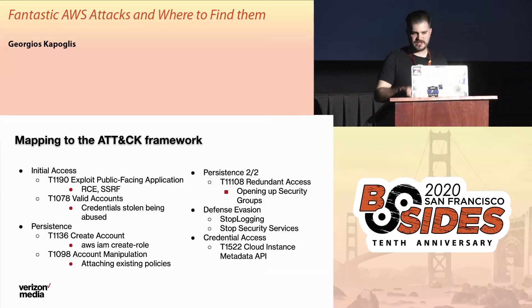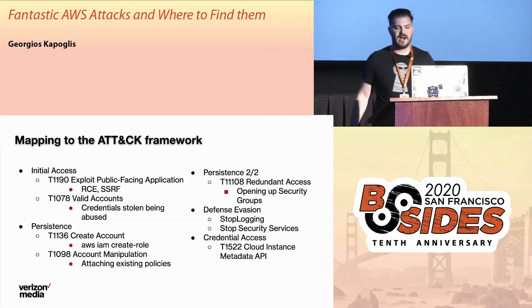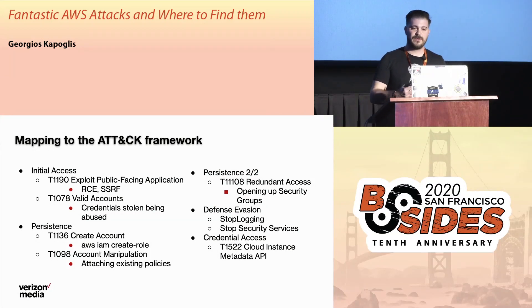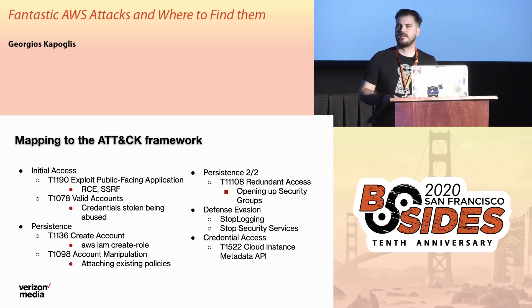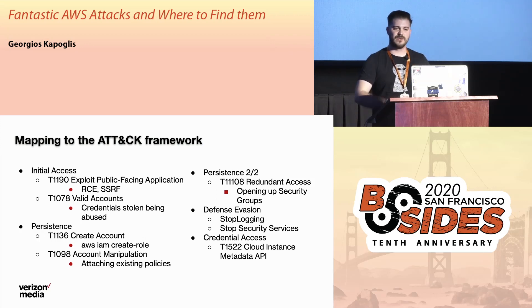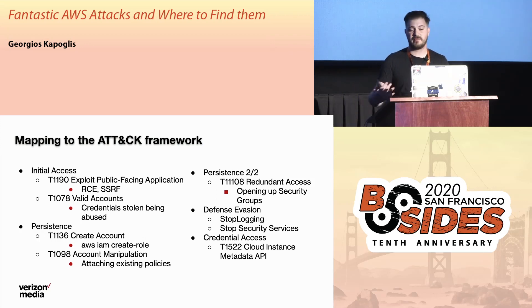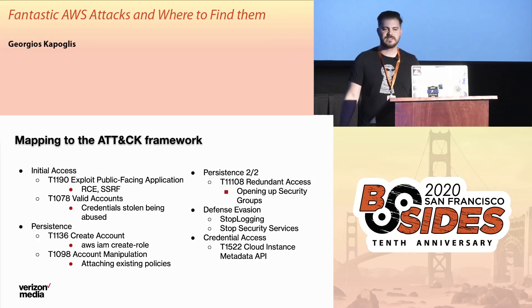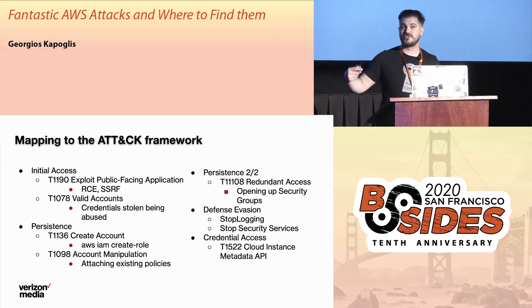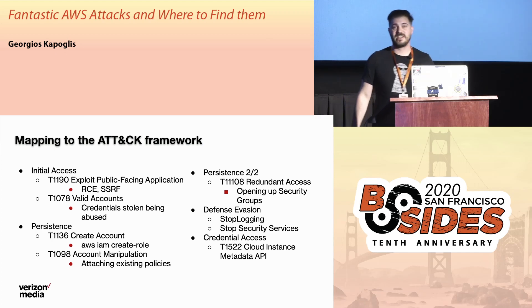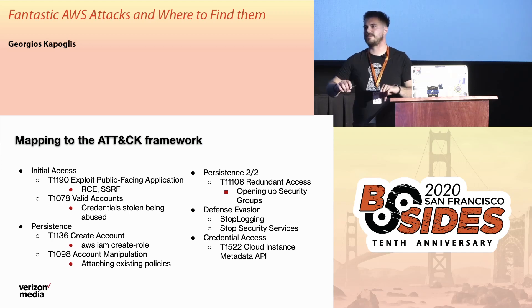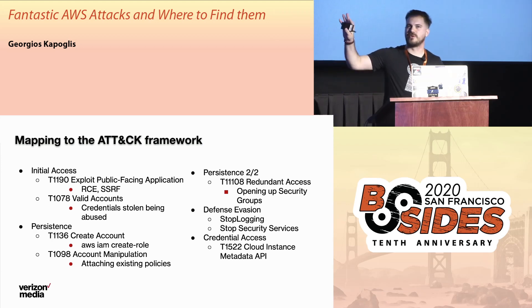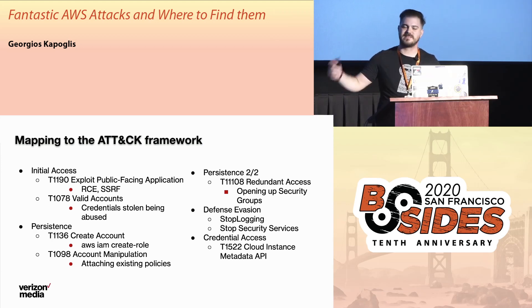After discovery, we have persistence. If you get access to an account, you want different ways to access it again or continue your access. You can create new accounts if you have the permissions, attach existing policies. And something really interesting is that if you have permissions to make changes to security groups, you can essentially open up a specific port for your attacking machine.